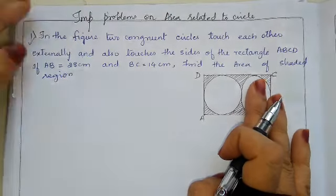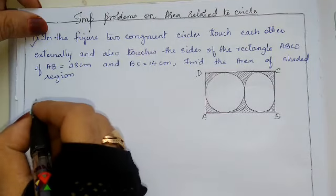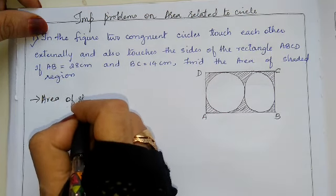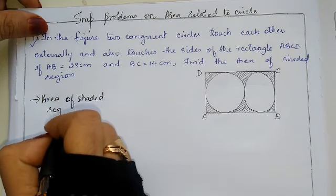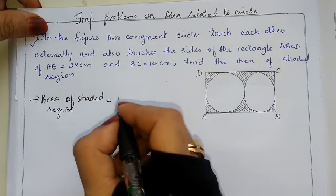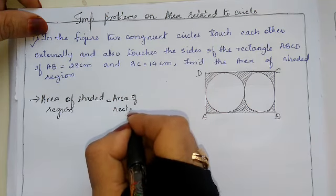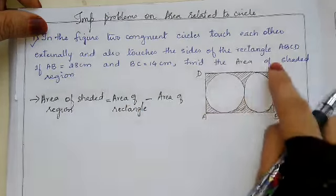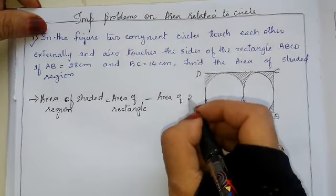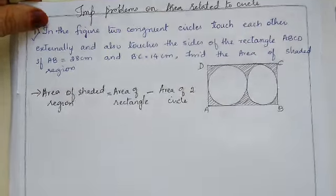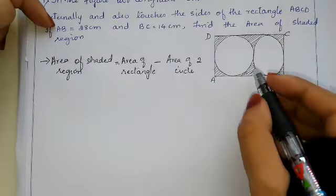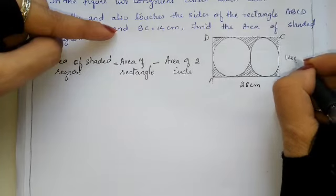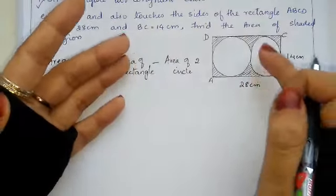To find the area of the shaded region, we take: area of shaded region equals area of rectangle minus area of two circles. They have given AB as 28 cm and BC as 14 cm. We know that in a rectangle, opposite sides are equal.